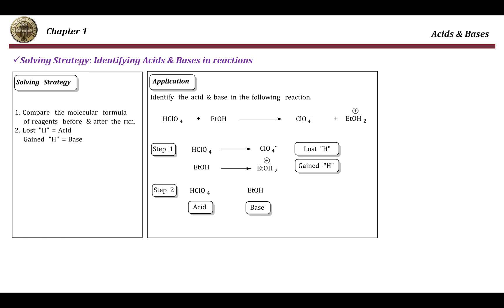The other thing we need to pay attention to is how to identify acids and bases in a reaction. If the equation is already written, you just have to look at which of the two reactants lost the hydrogen — that will be the acid — and which one gained the hydrogen — that will be the base. For example, HClO4 becomes ClO4 minus, so it lost one hydrogen, making it the acid. Ethanol accepted H+, so it gained one H, making it the base.